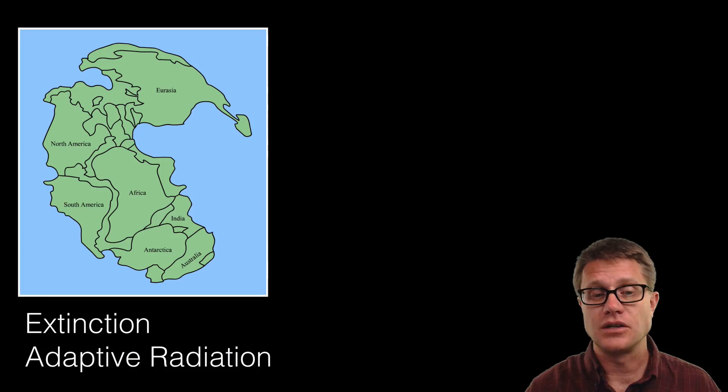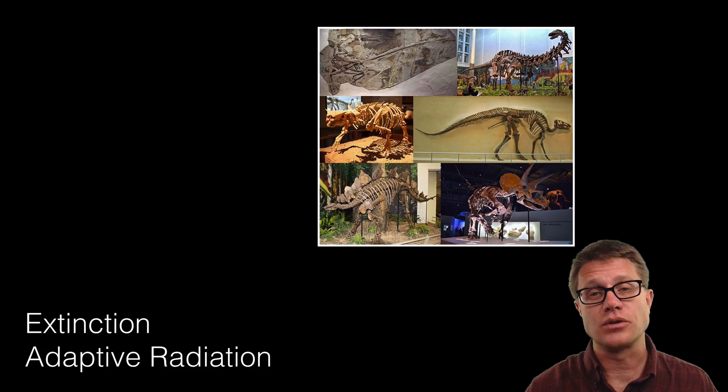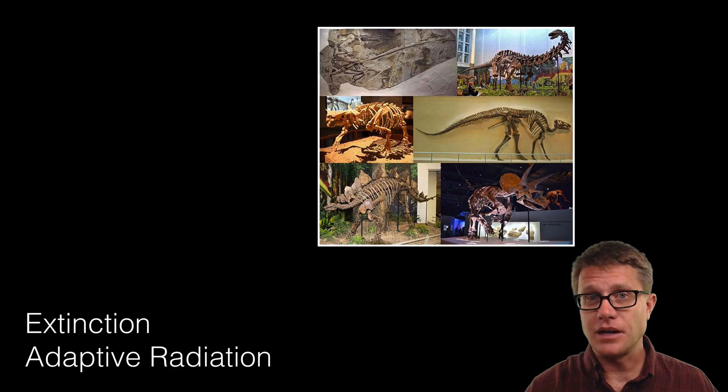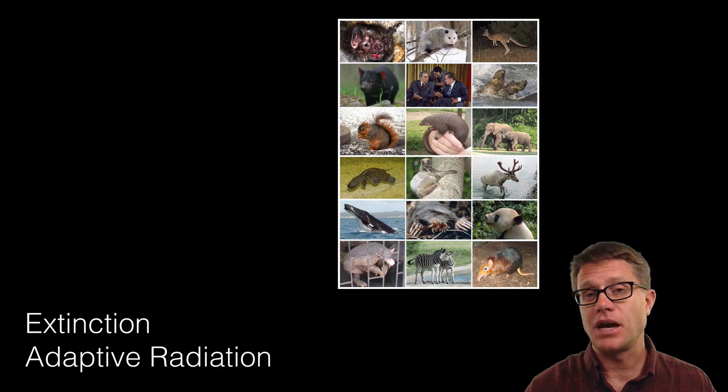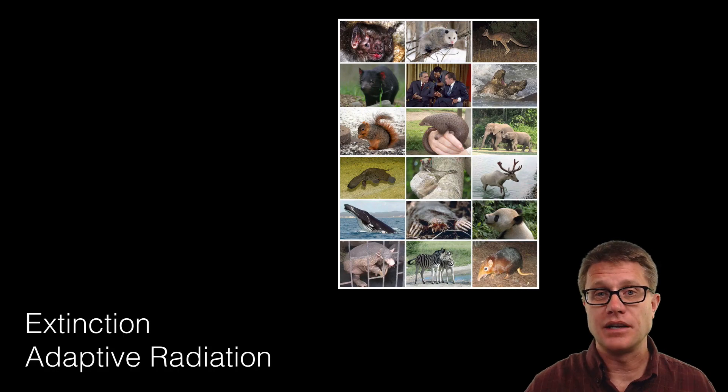It led to some of the worst mass extinctions on our planet where a large percent of life actually went away. Now this changed eventually as they broke apart. We had an adaptive radiation and all these dinosaur species showed up. What happened to them? We had a giant asteroid impact, mass extinction and that led to adaptive radiation of the mammals. And some people are saying we are headed into a sixth mass extinction. And so this is the worst way that climate can affect species.